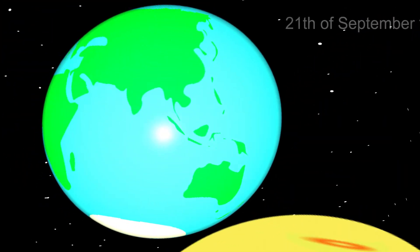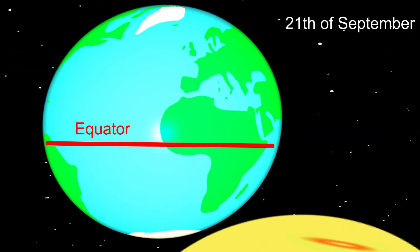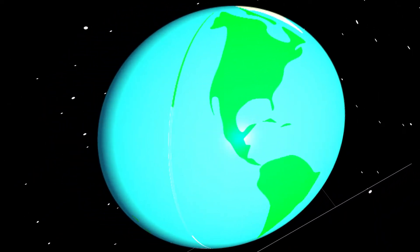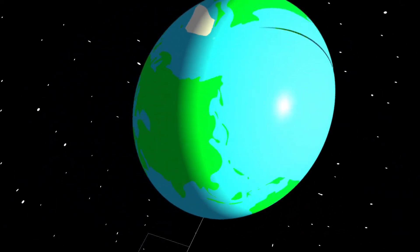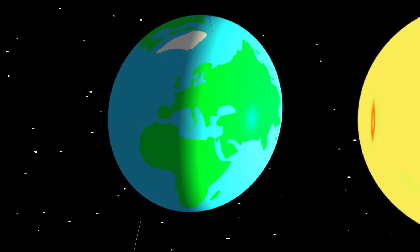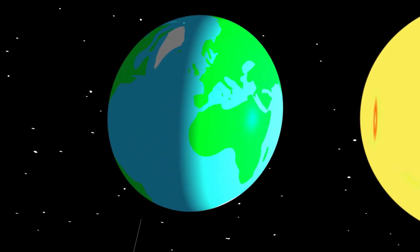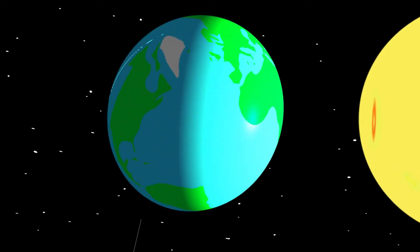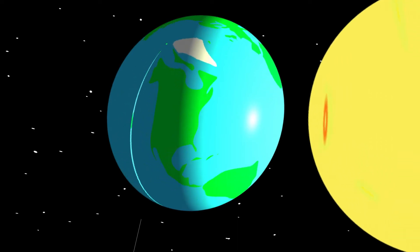Three months later, at September 21st, the sun heats the equator again. Midnight sun at the North Pole ends. After half a year of sunlight, it's getting dark again. This moment is the start for the midnight sun on the South Pole. The polar night has ended and a new period of 6 months of sunshine starts.